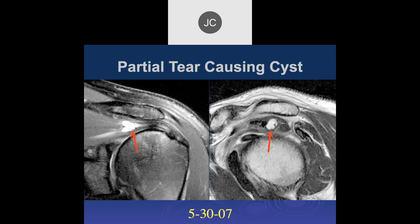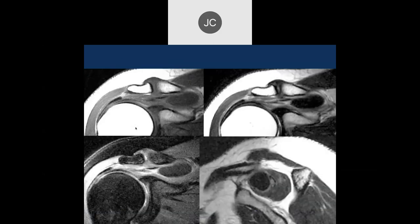Surgically, you'd probably scope this, open it up, debride the granulation tissue, sew it back together, and make a fairly normal reconstruction. There's enough there to put back together — though it's close to the muscle area, so it's a tough one.